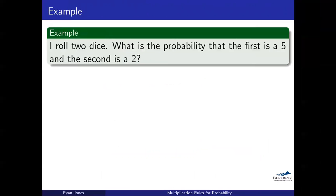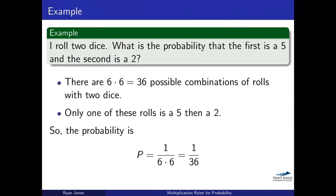Let's look at an example: we're going to roll two dice and we want to know the probability that the first is a five and the second is a two. Notice the word AND as opposed to OR. There are 36 possible combinations when rolling two dice — six times six. Only one of those combinations starts with a five and finishes with a two, so the probability is 1 out of 36.